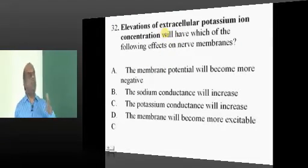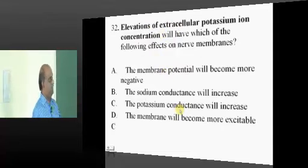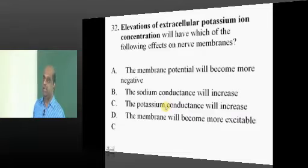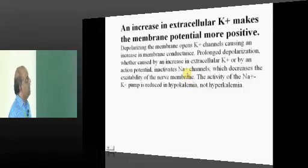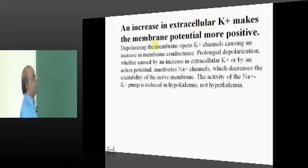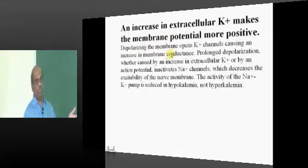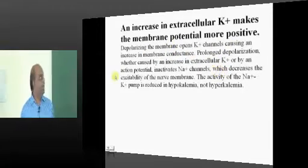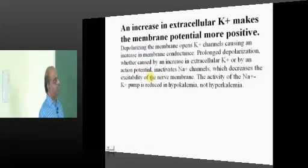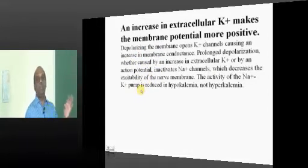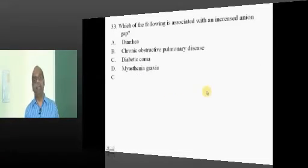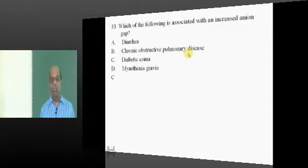If the extracellular potassium ion concentration is elevated, what will happen to the conductance of potassium? The leaking out of potassium depends upon the concentration gradient. Any increase of the extracellular potassium makes the membrane potential become more positive and that will open up the potassium channels typically. And the sodium potassium pump activity is typically reduced in hypokalemia, not in hyperkalemia.